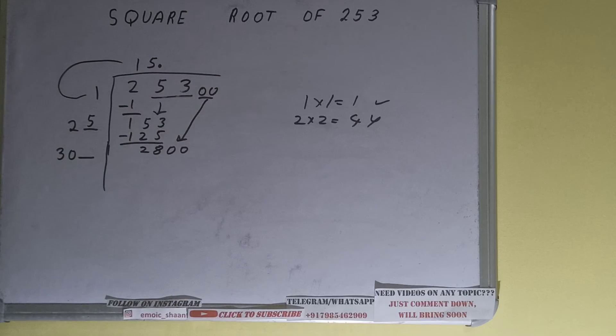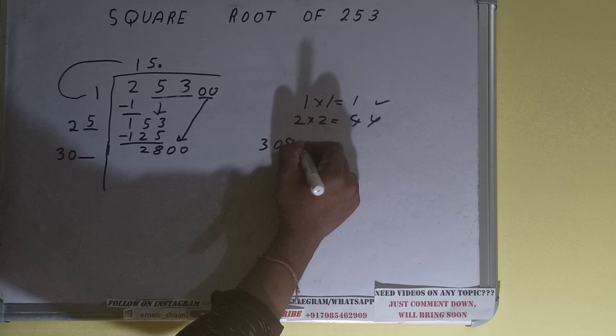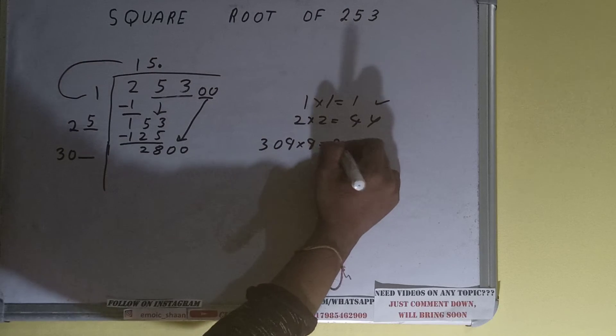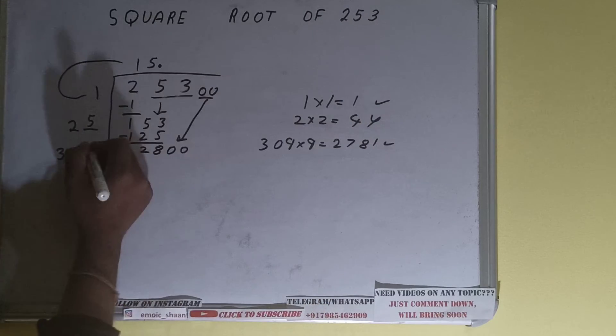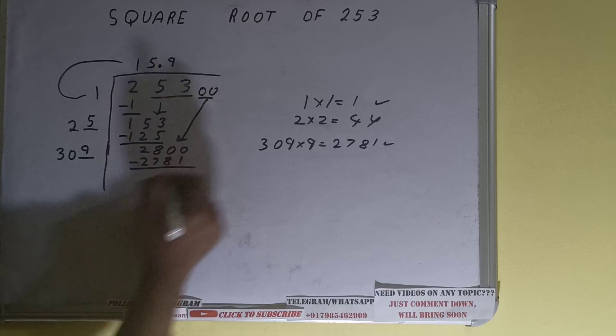Now we can try nine times. So 309 into 9 we can try, it will be 2781. That is good to take. So 9 here and 9 here will give 2781. Subtract it and we'll be having 19.